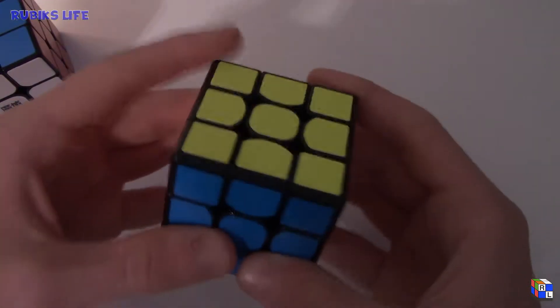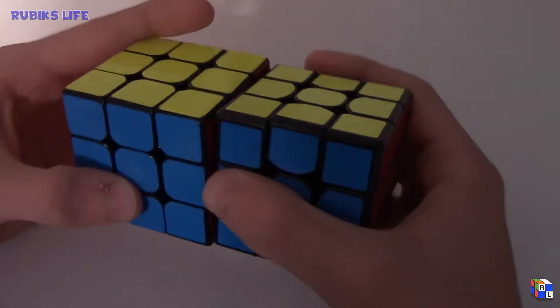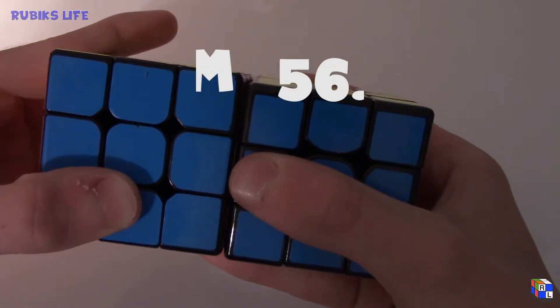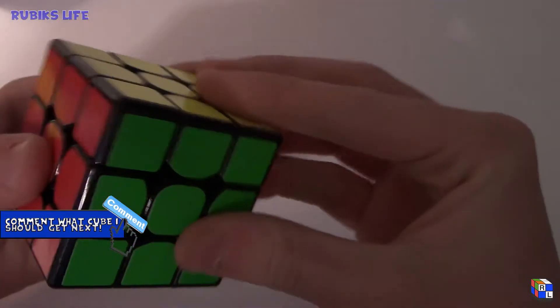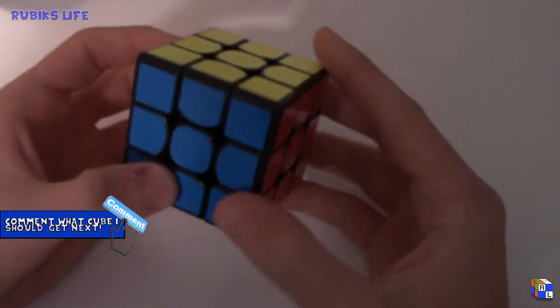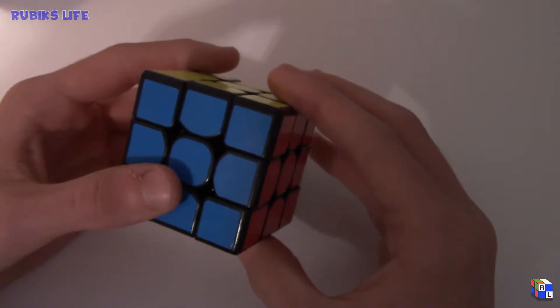Just feeling this cube, it feels different. It is a bit smaller than my 57 millimeter Aolong and it does feel pretty lubed. I've heard this is really fast out of the box. Let's give this thing some first turns.